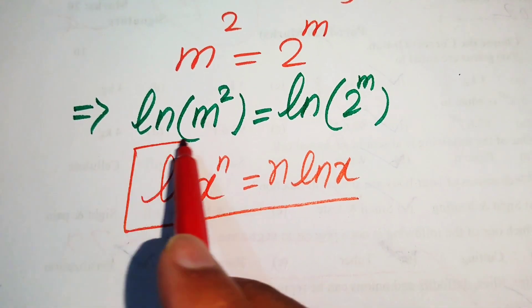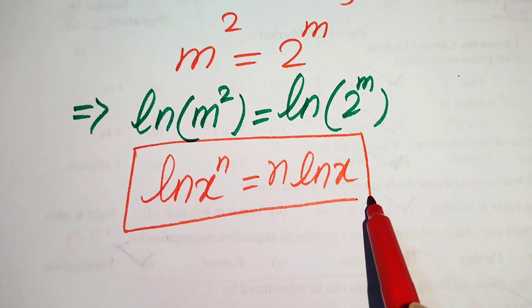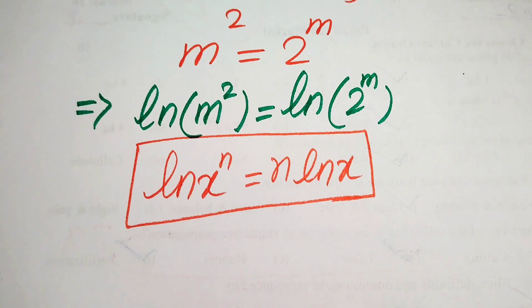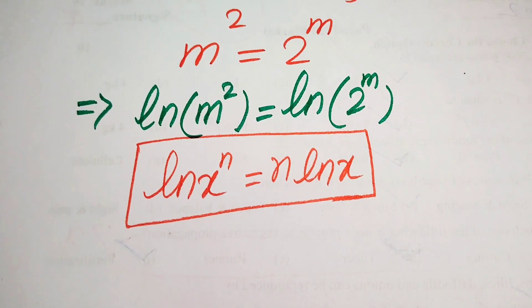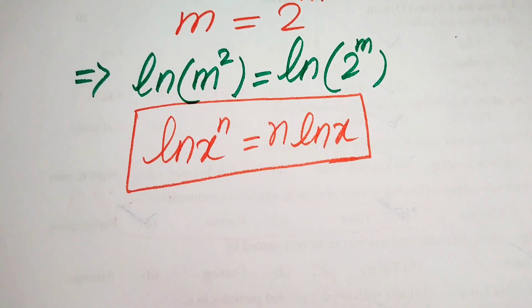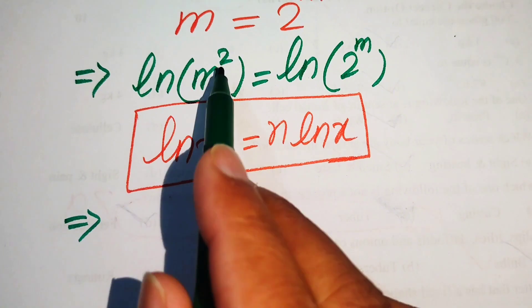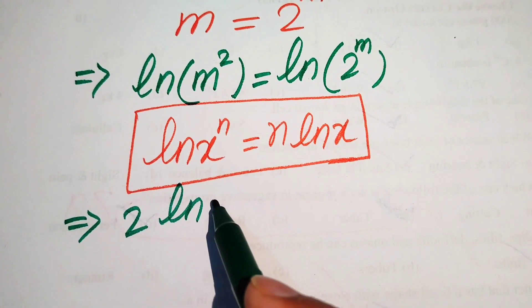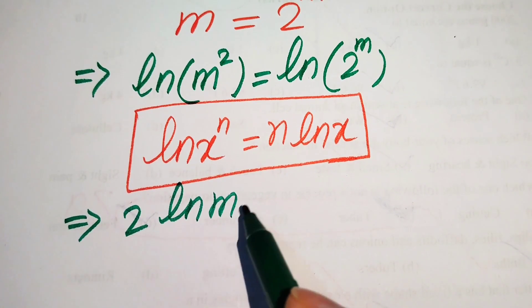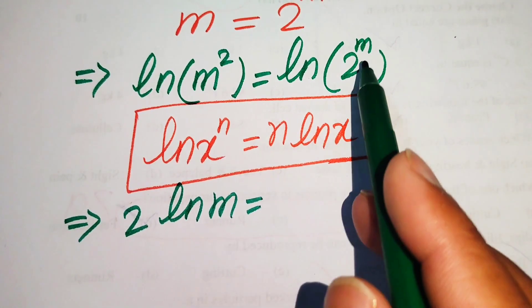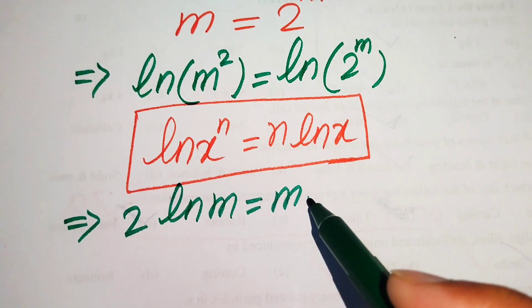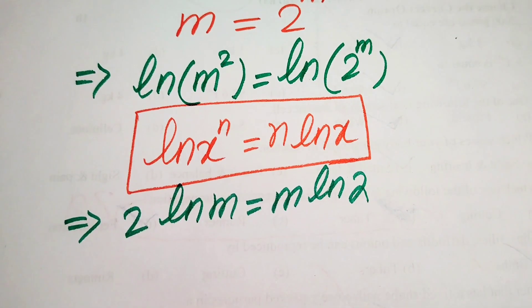We apply this property on both sides of the equation. Moving the 2 to the front on the left gives 2 times log m, and moving the m to the front on the right gives m times log 2.